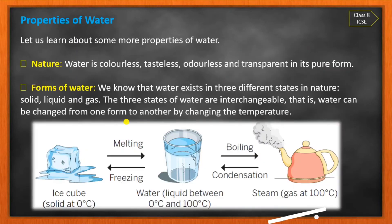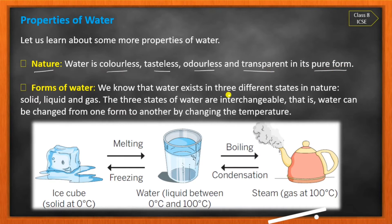The first property is the nature of water. Water is colorless, tasteless, and odorless. Water has no color, no taste, and no smell. In its pure form, water is transparent.